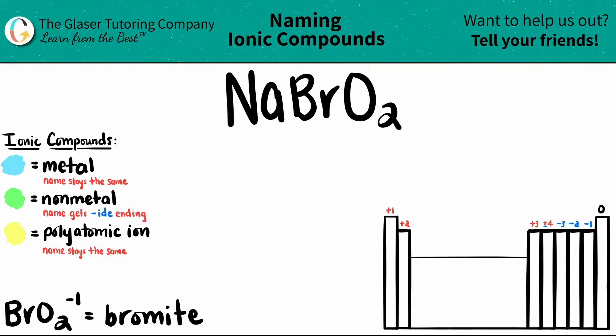In this case, we have Na, which is sodium; Br, which is bromine; and O, which is oxygen. So it's easy to find the polyatomic first and then go back and try to name knowing that information.